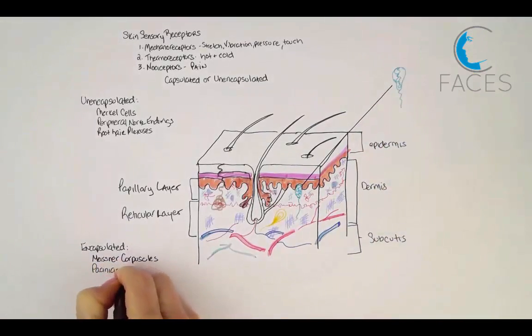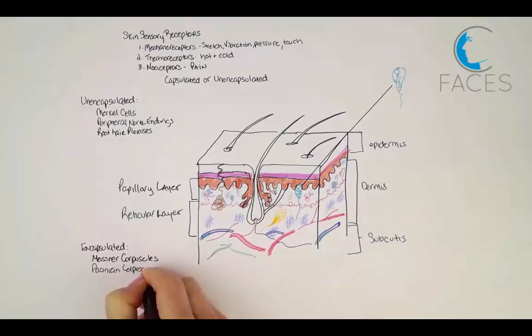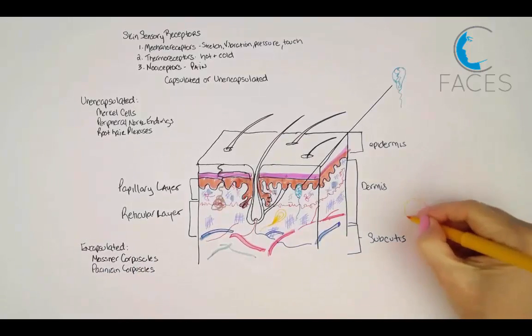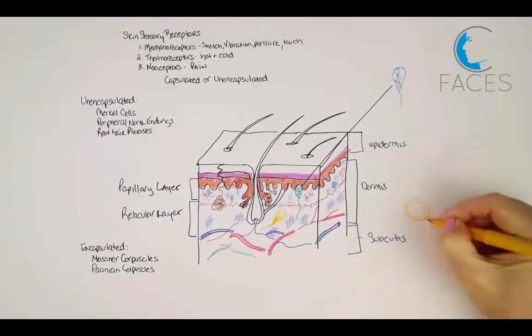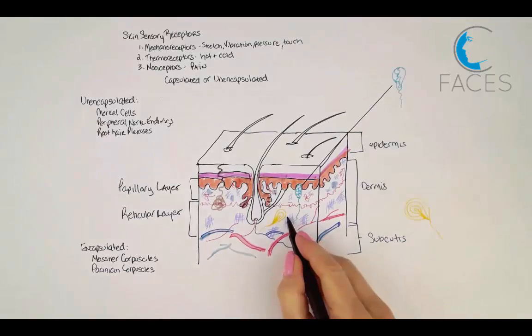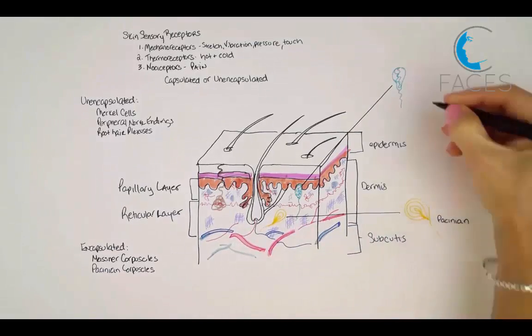Next are the Pacinian corpuscles, which are found deep in the reticular dermis and subcutis. These are specialized for sensing coarse pressure or sustained touch and vibrations. They're most numerous on the palms and soles.